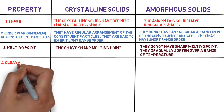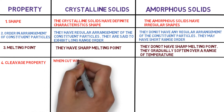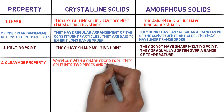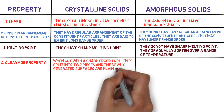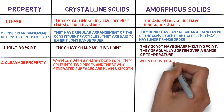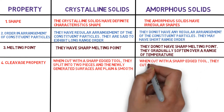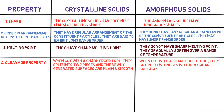The fourth property is cleavage. When cut with a sharp-edged tool, crystalline solids split into two pieces and the newly generated surfaces are clean and smooth. Whereas when amorphous solids are cut with a sharp-edged tool, they split into two pieces with irregular surfaces.